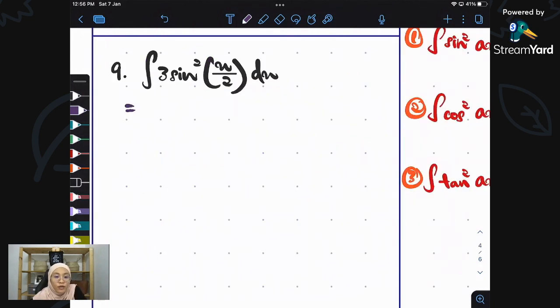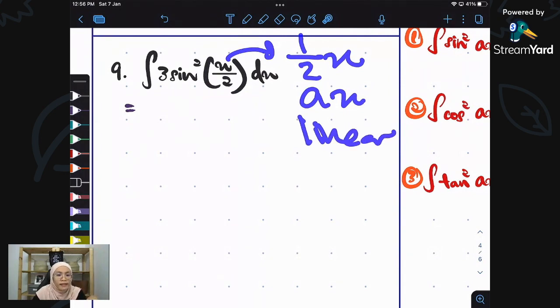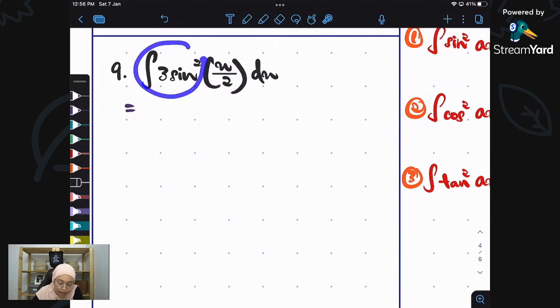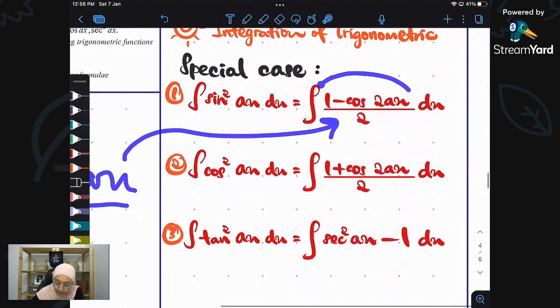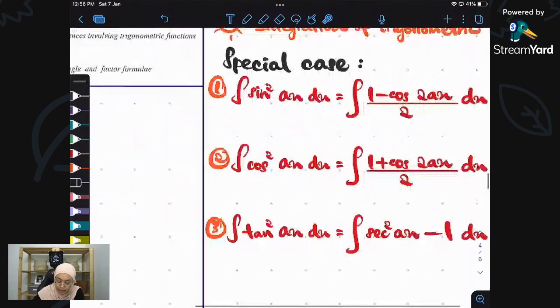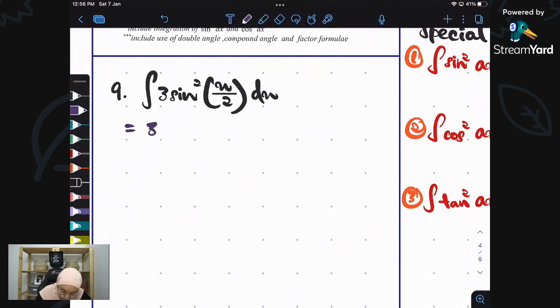Let's continue with the next one: integrate 3 sin squared X over 2. This is linear. How do I know it's linear? Because this is AX. You must be good in reading the questions. As I said so many times, we must be good in reading mathematics. Read the questions carefully. This is 1 over 2X, therefore this is linear. So integrate sin squared. The formula says it is 1 minus cos 2AX over 2 inside the integration.